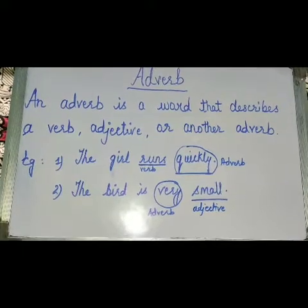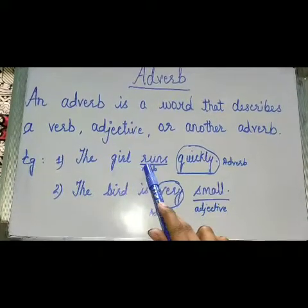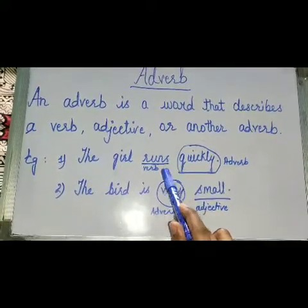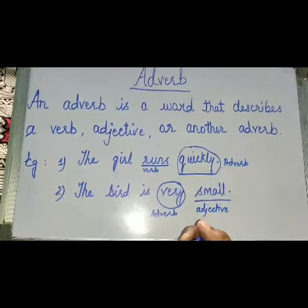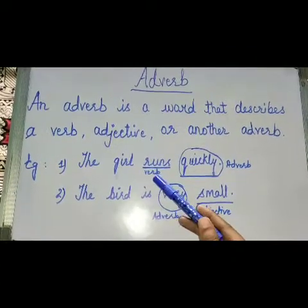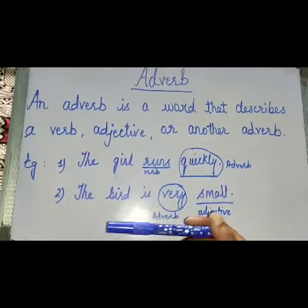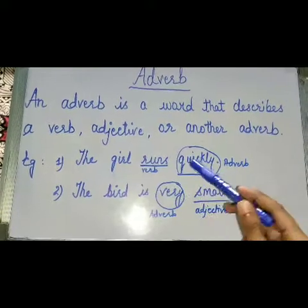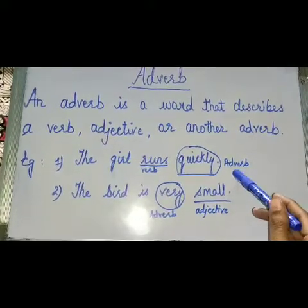Now see one example. The girl runs quickly. Here, what is the verb? Runs. And how does the girl run? Quickly. So, quickly is an adverb.